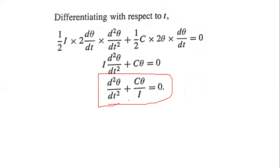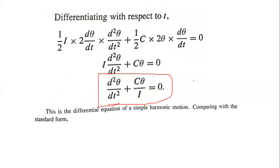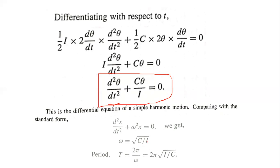This is the simple harmonic motion equation, analogous to d²x/dt² plus omega² x equals zero. We can calculate the time period by setting omega² equal to C divided by I. Here, I is the moment of inertia and C is the couple per unit twist.